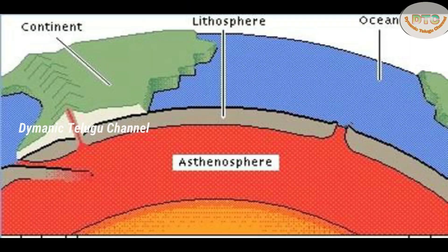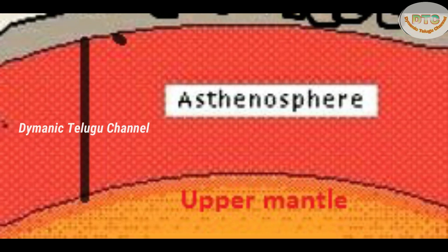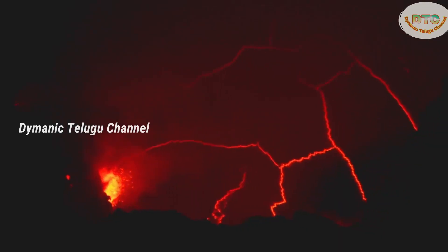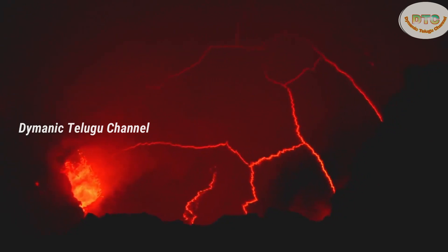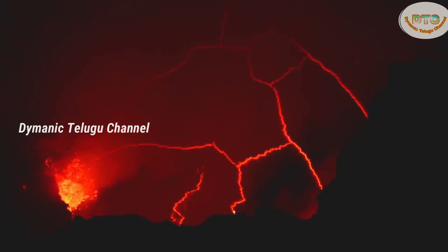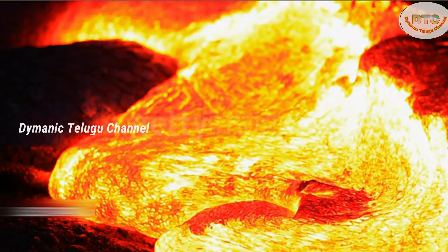Now, we have a clear picture of the asthenosphere. The lithosphere is solid. In the upper mantle and asthenosphere, there are rocks in liquid form. There is magma — a lot of magma.